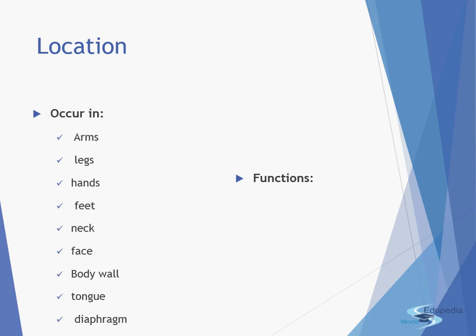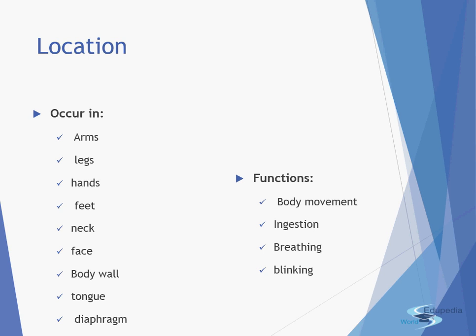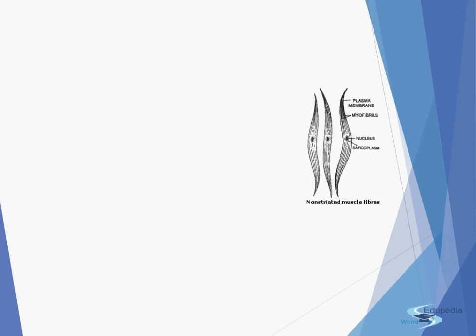The functions of striated muscle fibers: first, they help in body movement — moving from one place to another under our will. They also help in ingestion, which is the taking in of food. They help in breathing and the up and down movement of the diaphragm, and they help in blinking of the eye, which protects us from foreign particles.